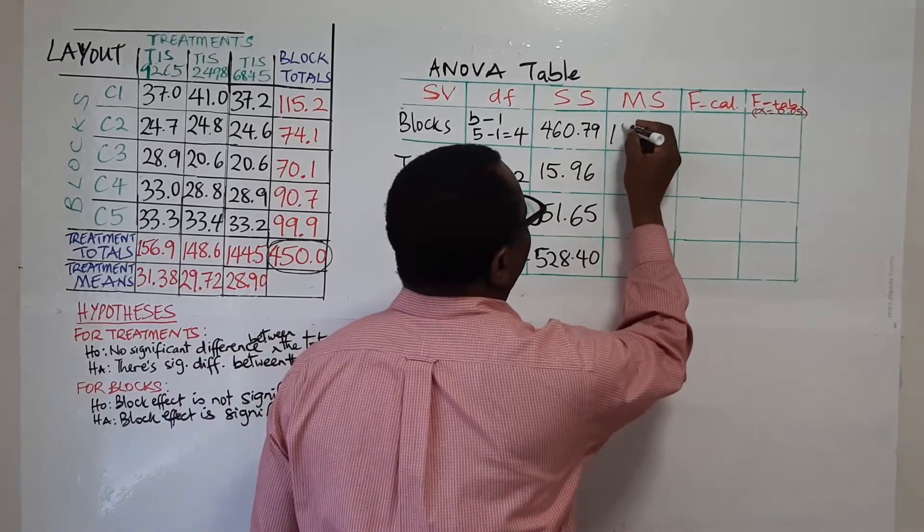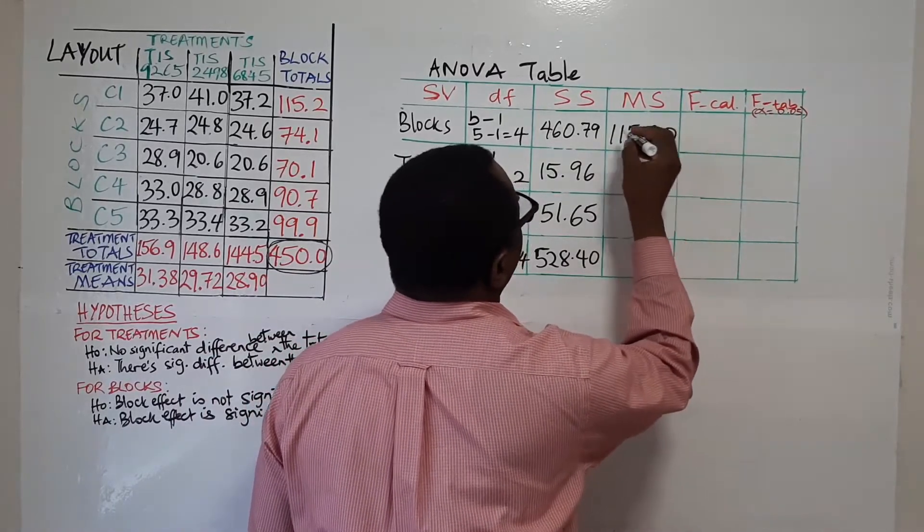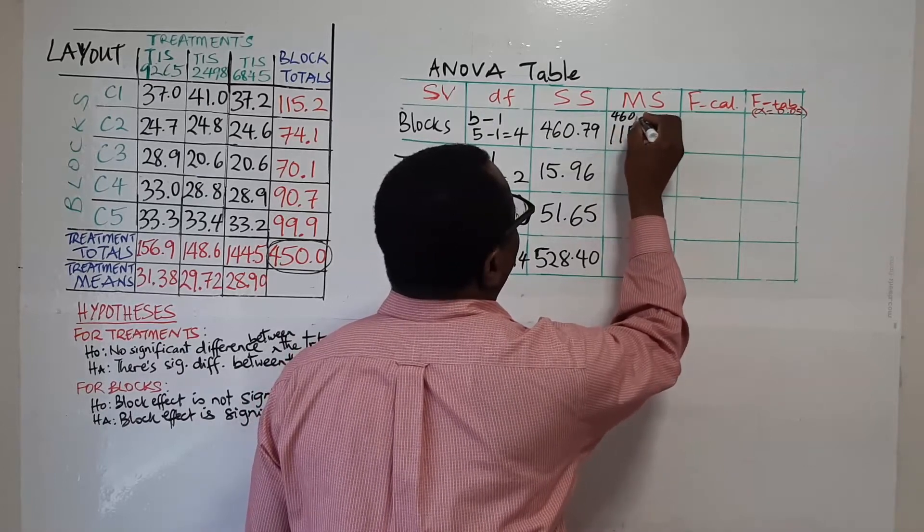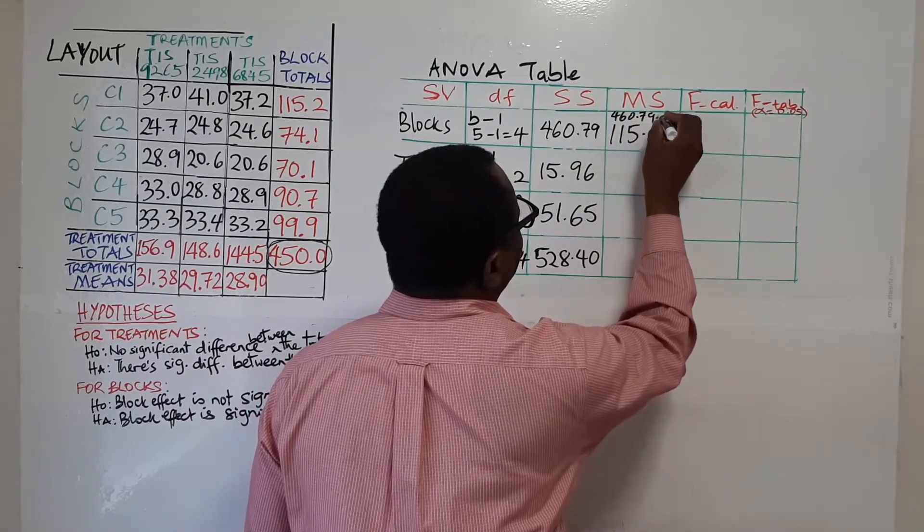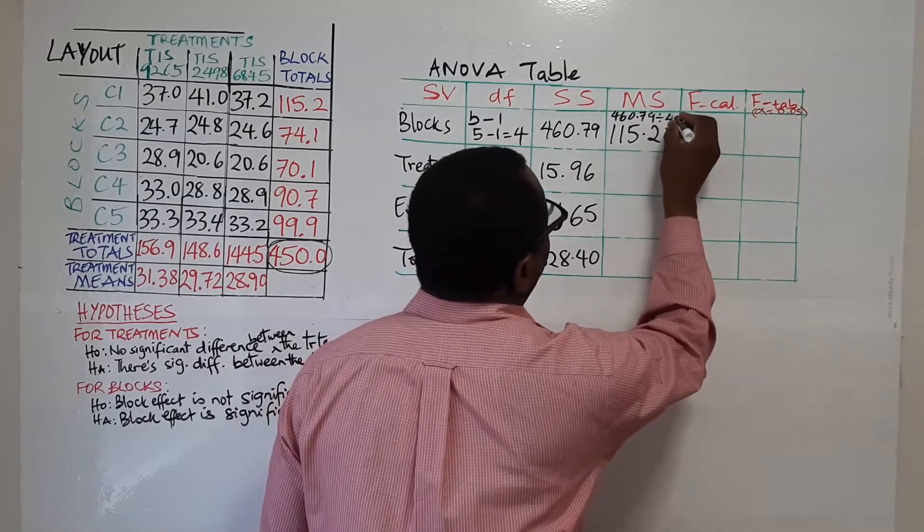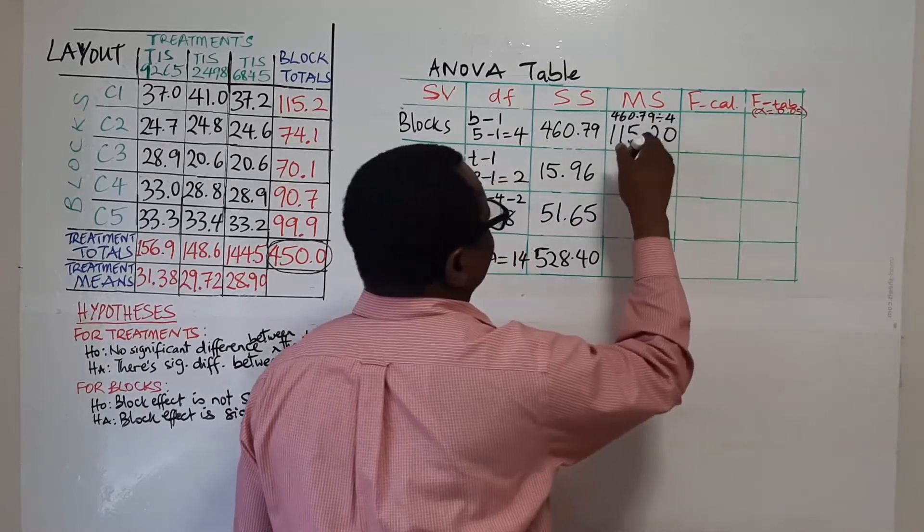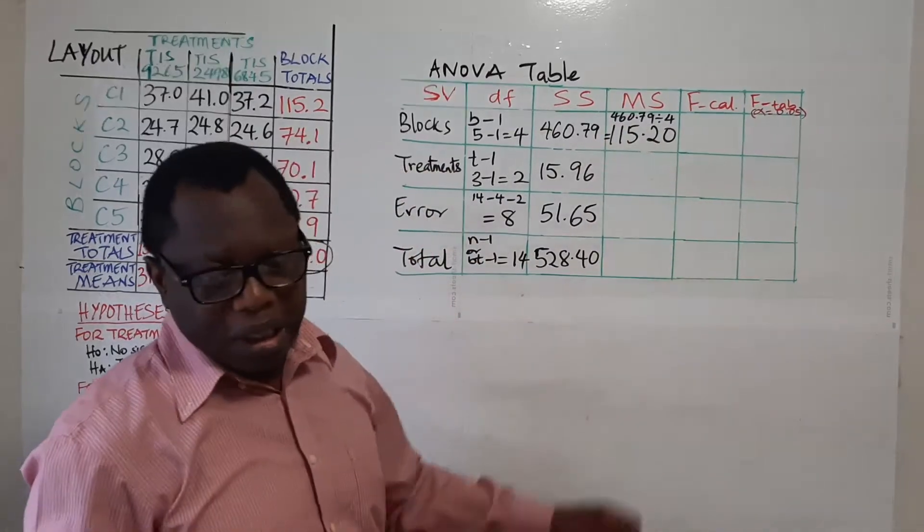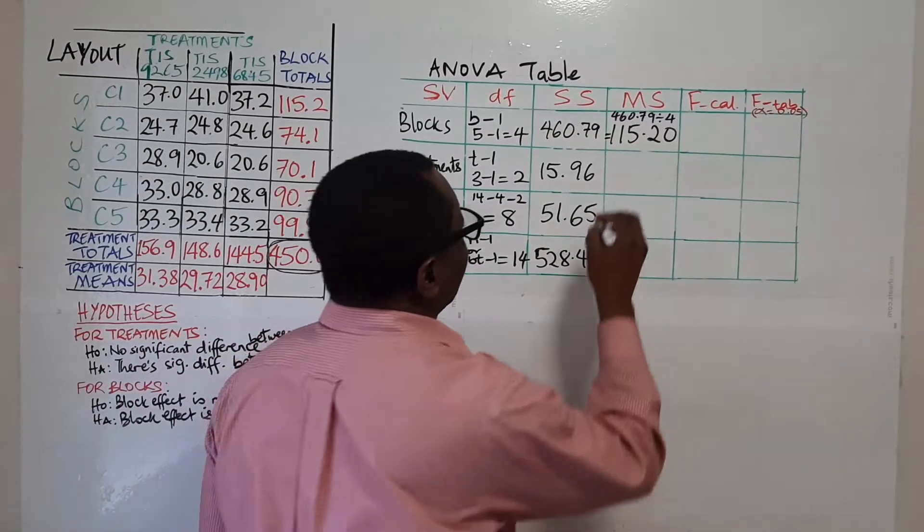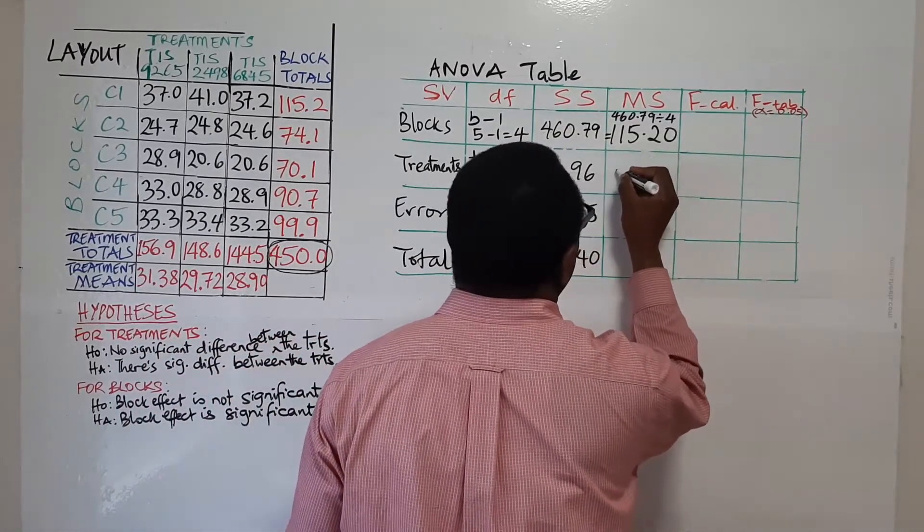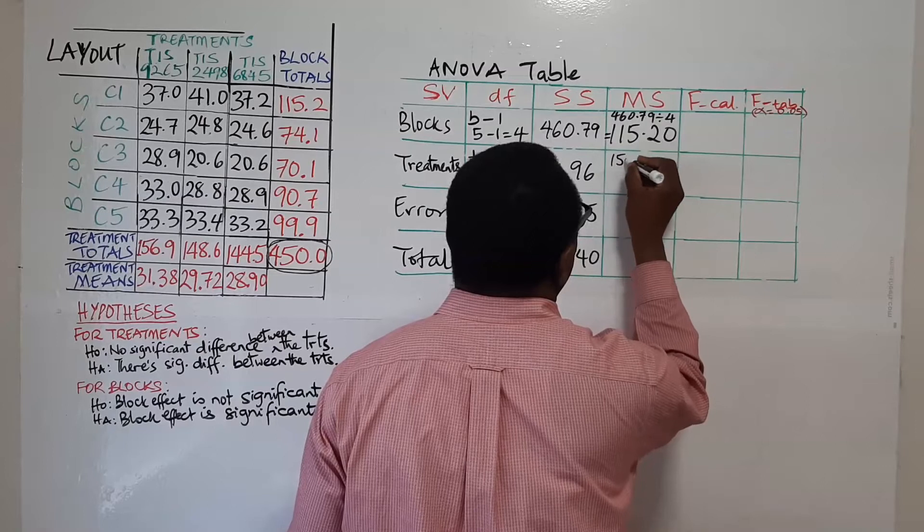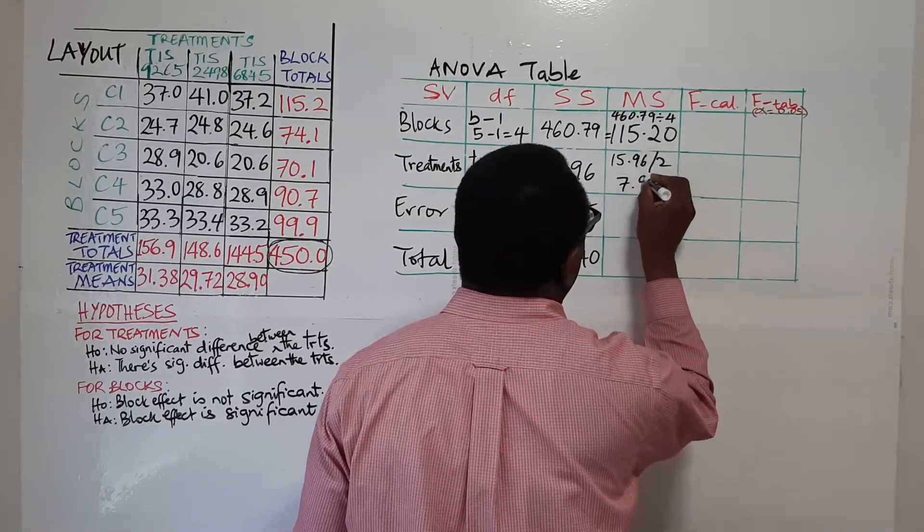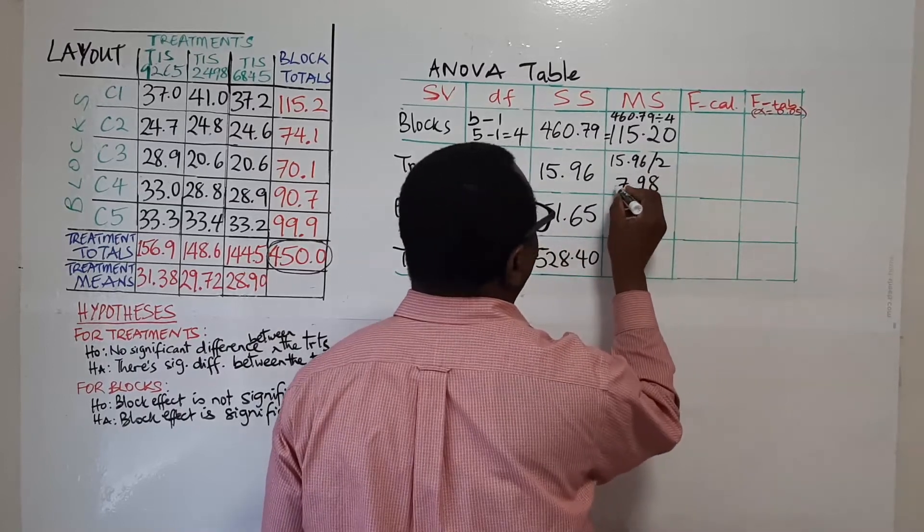So we have 115.20 which is obtained as 460.79 divided by 4. That's what gives you that.